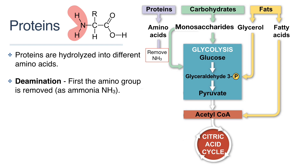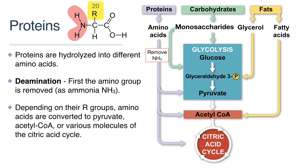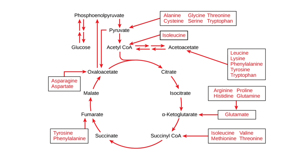Because there are 20 different possible amino acid R groups, each of them can enter cellular respiration at different stages depending on their chemical composition and the R groups involved. Amino acids are converted to either pyruvate, acetyl-CoA, or various molecules that are part of the citric acid cycle. Here's an image that shows you the specific entrance points for various amino acids.